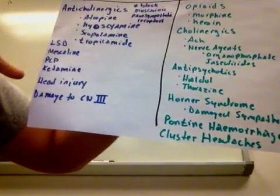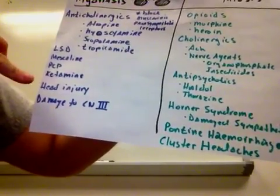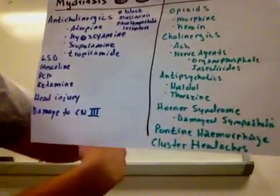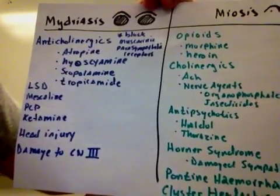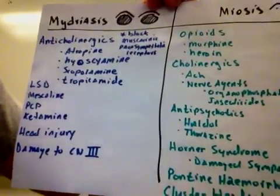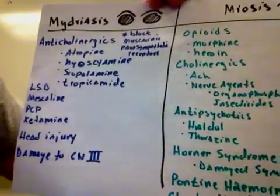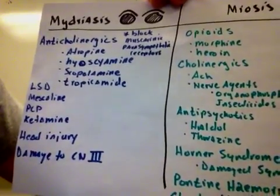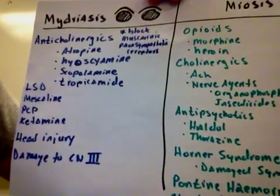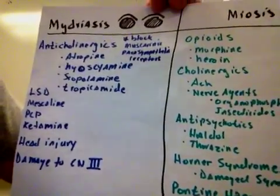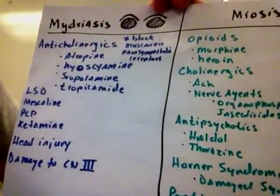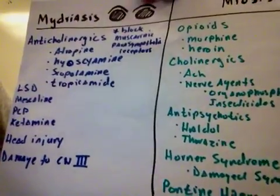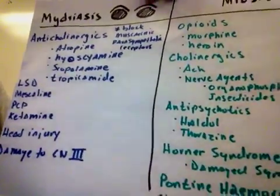Some other medications: LSD, mescaline, PCP, ketamine, head injury, and damage to cranial nerve 3. So cranial nerve 3 is interesting. It's what's known as the oculomotor nerve. It goes to the eye. And if I damage that, that is actually the major parasympathetic nerve to the eye. And of course, if I damage that, the sympathetic nervous system then can take over unopposed. And that's what causes pupil dilation. And of course, head injury can also put pressure on sympathetic nerves that innervate the cranial nerve 3.